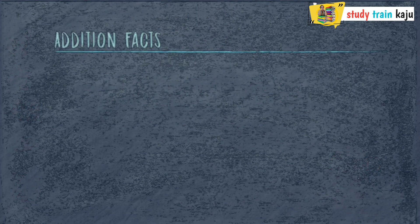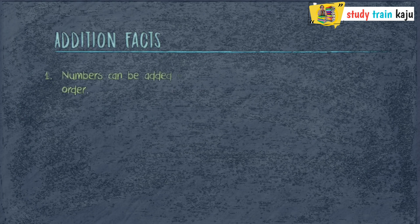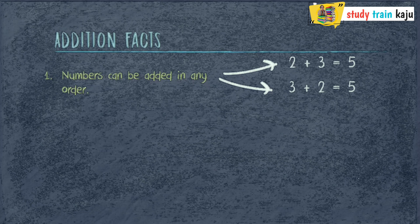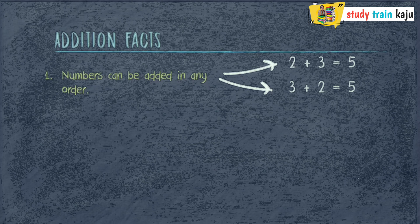Let's first understand addition facts. The first fact is numbers can be added in any order. For example, 2 plus 3 equals 5, and 3 plus 2 also equals 5.